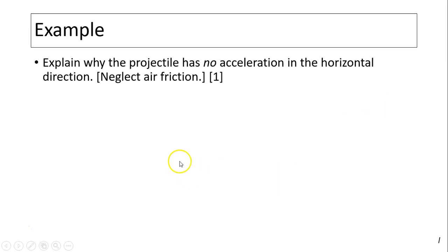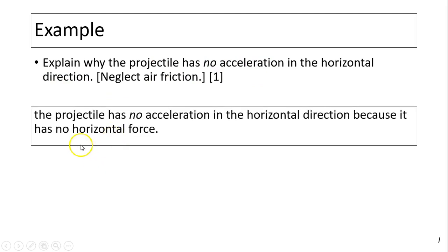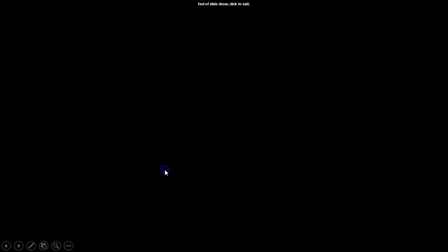Example: explain why the projectile has no acceleration in the horizontal direction. Acceleration is defined as change in velocity over time, and it is produced by net force. The projectile has no horizontal acceleration because there is no horizontal force — no horizontal net force. That's it for today, thanks for watching.